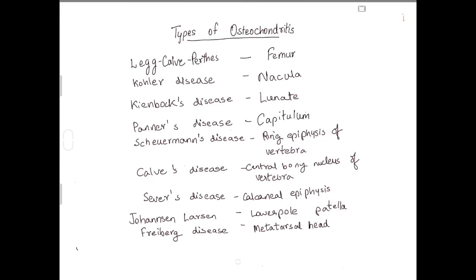The first one is Legg-Calvé-Perthes disease. 'Leg' is a part of the lower limb, as well as the femur. This way we can easily remember it is related to the femur of the lower limb.